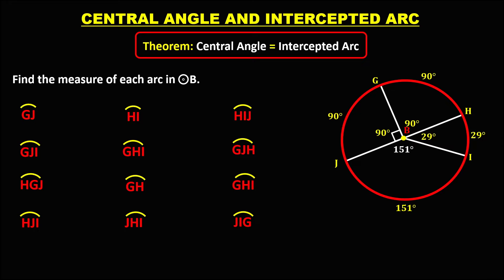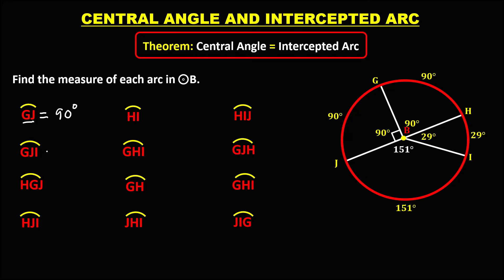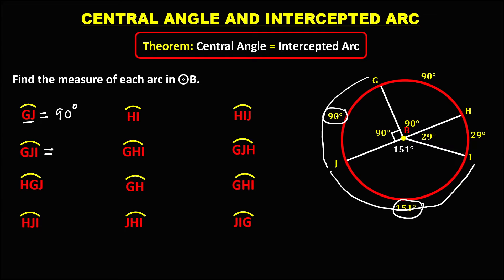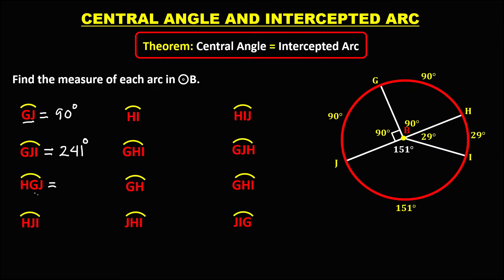Now that we have all the values for the angles and arcs, we can solve the problem. To find the measure of arc GJI, we add the two corresponding arcs: 90 degrees plus 151 degrees, so arc GJI equals 241 degrees.